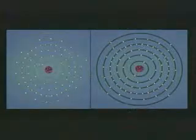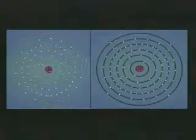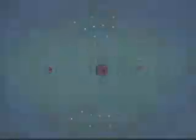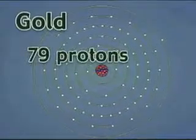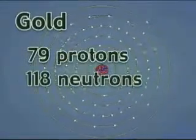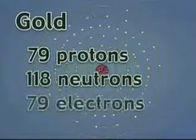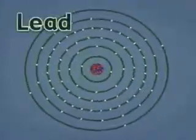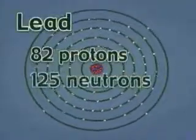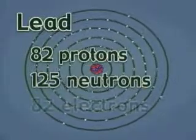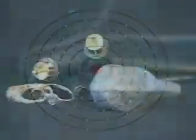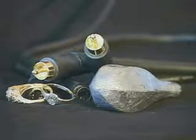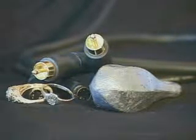The atoms in these two elements have different numbers of protons, neutrons, and electrons. Gold has 79 protons, 118 neutrons, and 79 electrons, whereas lead has 82 protons, 125 neutrons, and 82 electrons. Due to these differences in chemical structure, these substances are very different from each other.